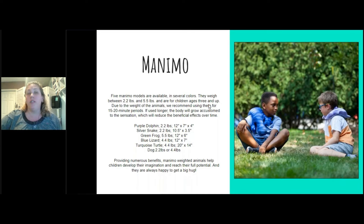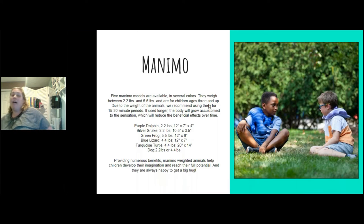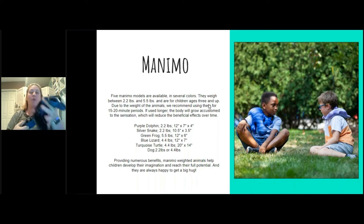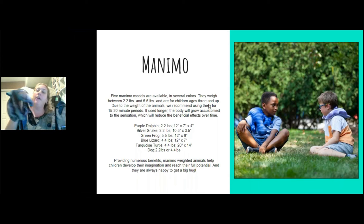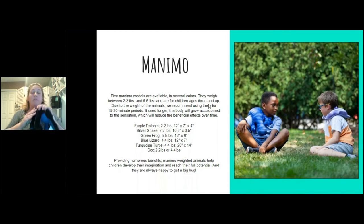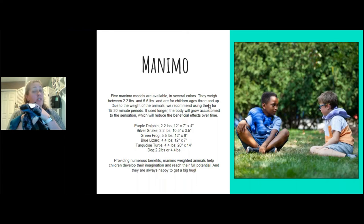The next section is the sensory section. The first product is the Manimo weighted animals. The great thing about these is that they're really easy to clean — that's kind of Manimo's claim to fame. The newest member of the Manimo collection is a dog, available in two sizes. Kids love this because it reminds them of an actual dog. The material it's made of is nice and soft, so they can pet it and get some soothing from it.